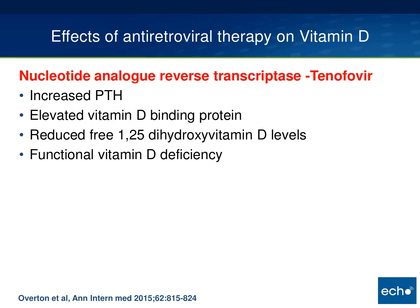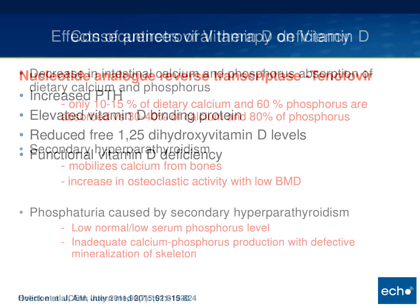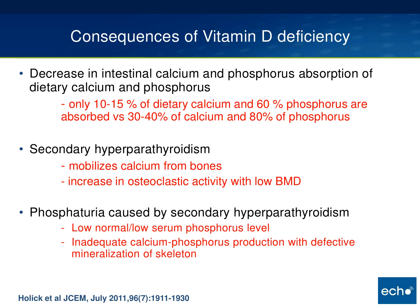Tenofovir has a significant impact on the bones by increasing the PTH—thought to be a proximal tubular effect—and also elevates the vitamin D binding protein, thereby reducing the free 1,25-dihydroxy vitamin D levels, creating a functional state of vitamin D deficiency. As for the consequences of vitamin D deficiency, there is decreased intestinal calcium and phosphorus absorption: only 10 to 15 percent of dietary calcium is absorbed as opposed to 30 to 40 percent when vitamin D is adequate. With phosphorus, only 60 percent of dietary phosphorus is absorbed as opposed to 80 percent when one is repleted with vitamin D.